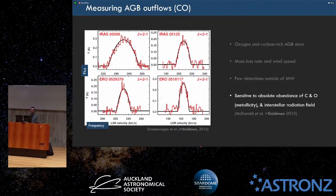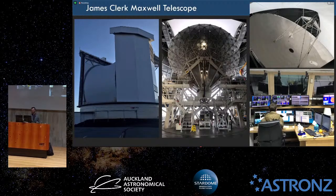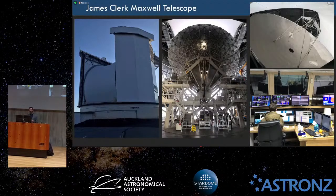I did this using the James Clerk Maxwell Telescope — got to travel to Hawaii, go up to the top of Mauna Kea, and observe. After traveling there and adjusting to the time zone and then the night shift, you go up to the mountain where you have about 60% of the oxygen you typically have, and you do the observing.